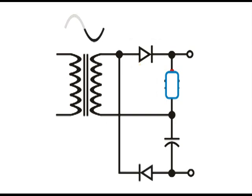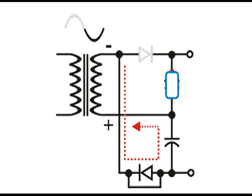Now, when we get to the negative part of this cycle, where we have negative at the top of the secondary and positive at the bottom of the secondary, current is going to flow in this direction, forward biasing the bottom diode and reverse biasing the top diode. And it will charge the bottom capacitor.